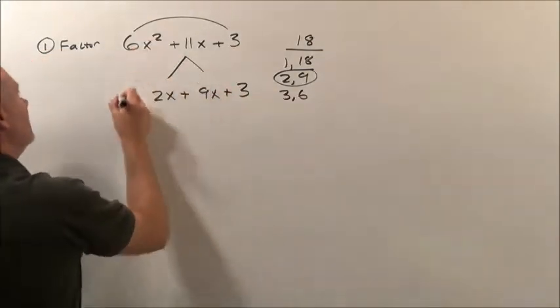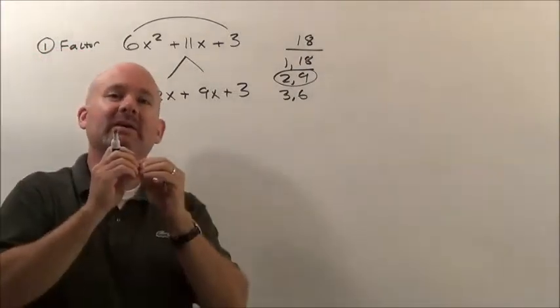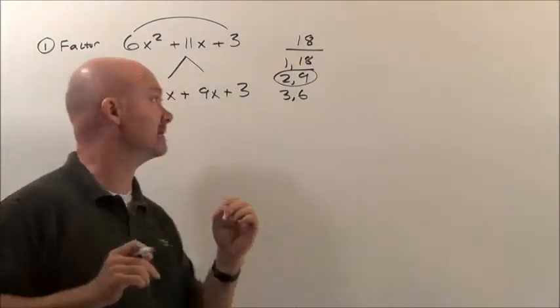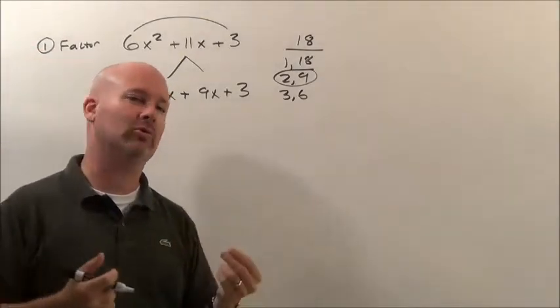The 3 is right there, 6x² is here. So all we've done is we've taken the b value and bust it into two pieces. We've created this, and now we're going to do what's called factor by grouping.